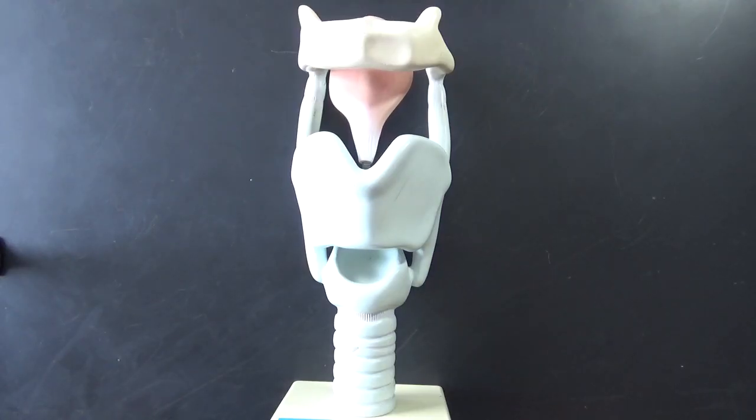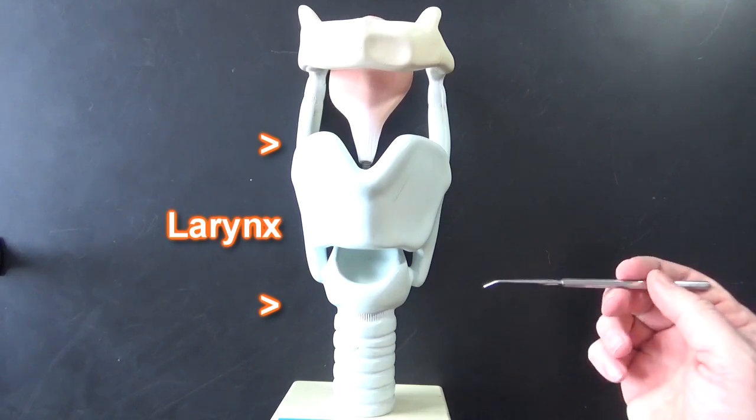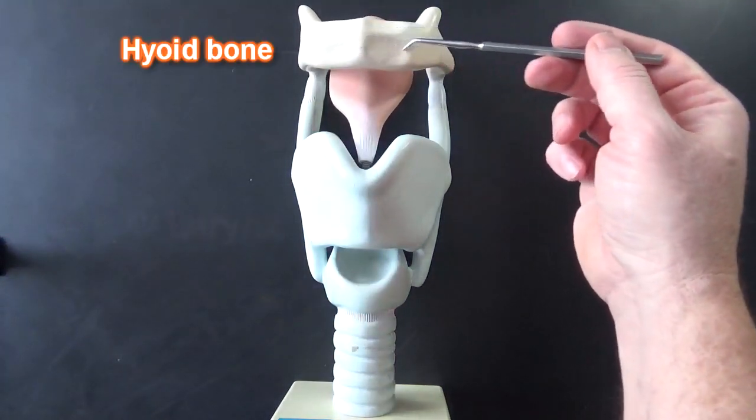What we're looking at here is the larynx. This is a model of the larynx. This is the hyoid bone right here.